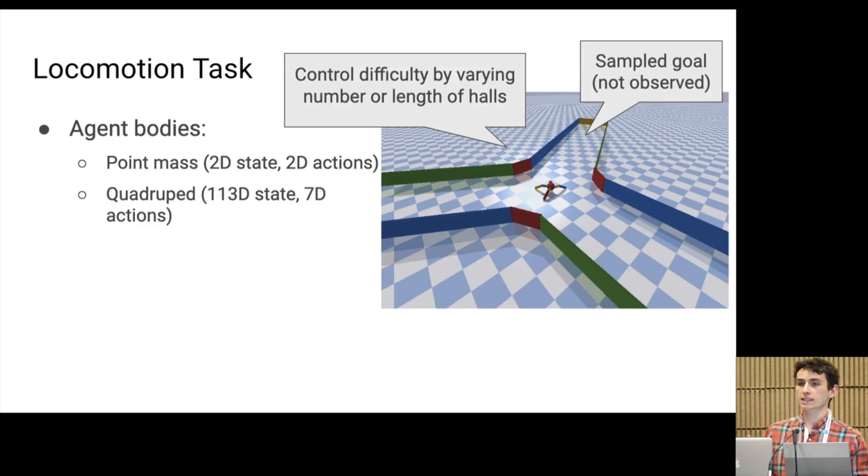During training, the robot will have access to some distribution over plausible goal locations. And then at test time, we will sample a goal from the same distribution and the robot could hopefully move to this goal state as quickly as possible.